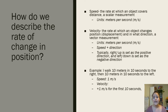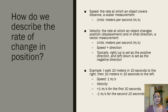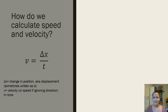For example, if I walk 10 meters in 10 seconds to the right and then 10 meters in 10 seconds to the left, my speed is one meter per second the whole time. But for velocity we need to be more specific: positive one meter per second for the first 10 seconds, and negative one meter per second for the second 10 seconds. My average velocity would be zero because I ended up right back where I started.